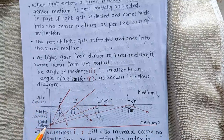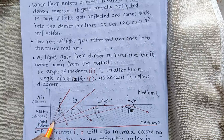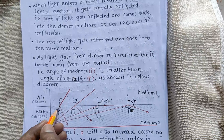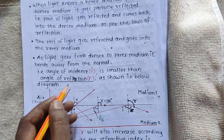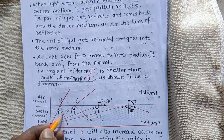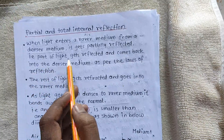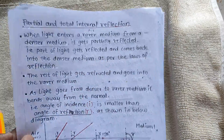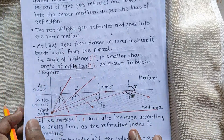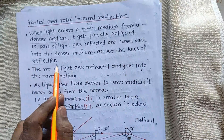And 50 rays are getting bounced back — that is reflection. So only 50 rays come back, that's why it is called partial reflection, because all 100 are not coming back. So the part of light gets reflected as per the laws of reflection.